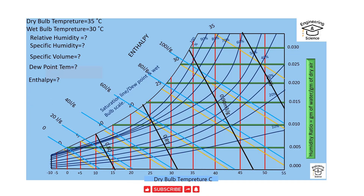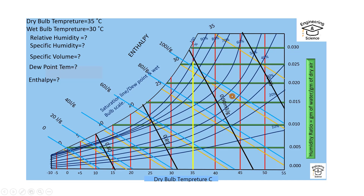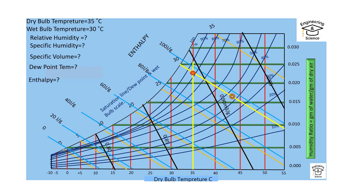Next we have to draw a line parallel to the dry bulb temperature axis at 35 degrees Celsius. We also have to draw another line parallel to the wet bulb temperature — the orange line — at 30 degrees Celsius. Now we have to find the intersection point of these two lines.